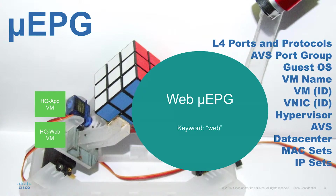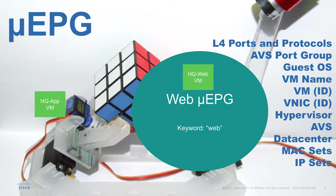For instance, if I specify VM name as an attribute for my new micro-segmented EPG and specify the keyword as 'web,' I will automatically have a VM by the name of hqweb get pulled into that micro-segmented EPG, and the policy applied to that EPG will be applied automatically to that VM.